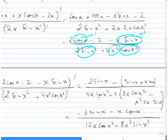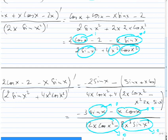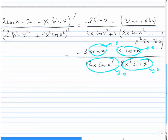Again, it's easy to check: sin(0) goes to 0, x goes to 0, cos(0) is 1. So x forces the numerator to go to 0, and x forces the denominator to go to 0 as well. We have 0 over 0 again, and we are going to use L'Hôpital's Rule for a fourth time.